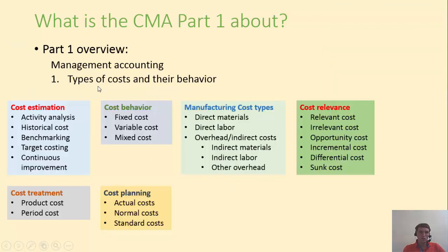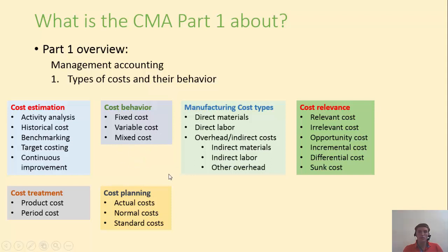The first topic we're going to cover is costs — types of costs and their behavior. We'll discuss methods for estimating costs, including activity analysis, historical cost, benchmarking, and so on. We also need to understand how costs behave: whether they are fixed regardless of production level, whether they move proportionally to production, or whether they contain both a fixed and a variable component. We'll also talk about manufacturing costs and categorize these into direct materials, direct labor, and overhead. We're going to study whether a cost is relevant for a decision or not — relevant costs such as opportunity costs, incremental costs, and differential costs; and irrelevant costs such as sunk costs.